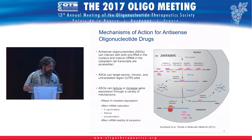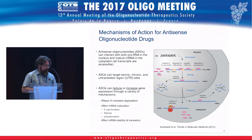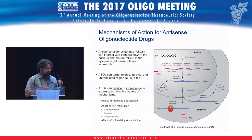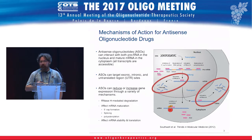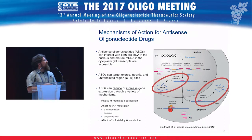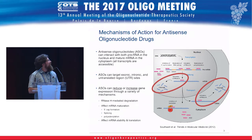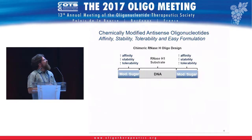Once they form those duplexes, ASOs can modulate a variety of biological processes. We've shown we can interfere with polyadenylation, 5-prime cap formation, and splicing can be modulated as well. But since the topic of this session is knockdown, I'm going to focus on what ASOs are probably most famous for: RNase H-dependent degradation of RNAs and transcripts, which can happen both in the cytoplasm and the nucleus.